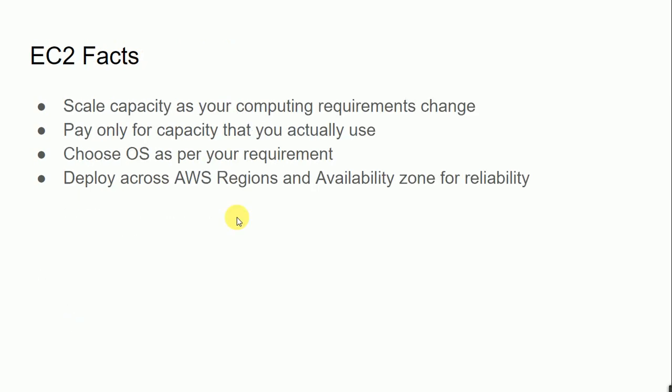Now, EC2 facts — things to consider before implementing EC2. You can scale capacity as your computing requirement changes. For example, if I have set up a two-core CPU with 4GB RAM instance and I need to increase it to 4 CPU and 8GB RAM, I can do so instantly with limited downtime. If we compare this to classic physical infrastructure, we would need to buy new hardware or upgrade RAM with significant downtime.